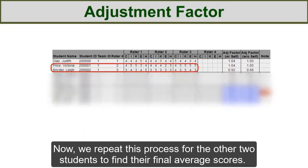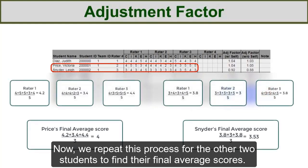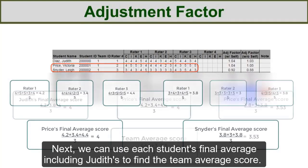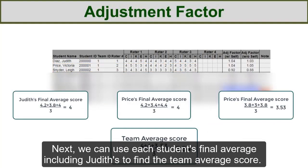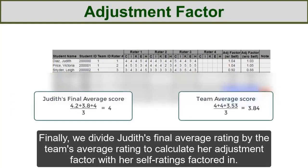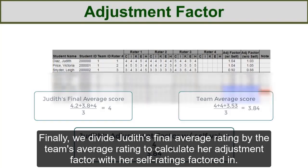Now, we repeat this process for the other two students to find their final average scores. Next, we can use each student's final average, including Judith's, to find the team average score. Finally, we divide Judith's final average rating by the team's average rating to calculate her adjustment factor with her self-ratings factored in.